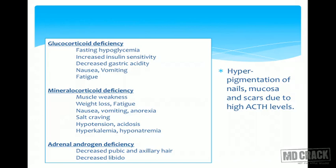Features of Addison's are divided into glucocorticoid deficiency, mineralocorticoid deficiency, and androgen deficiency. Glucocorticoid deficiency causes fasting hypoglycemia, increased insulin sensitivity, decreased gastric acidity, nausea, vomiting, and fatigue. Mineralocorticoid deficiency causes hyperkalemia and hyponatremia with features of muscle weakness, weight loss, dehydration, nausea, vomiting, hypotension — and some patients present for the first time with shock. In females, there is decreased libido because adrenal DHEA/DHEAS drives libido in women (unlike men, whose testes produce enough testosterone). Decrease in pubic and axillary hair is also seen.